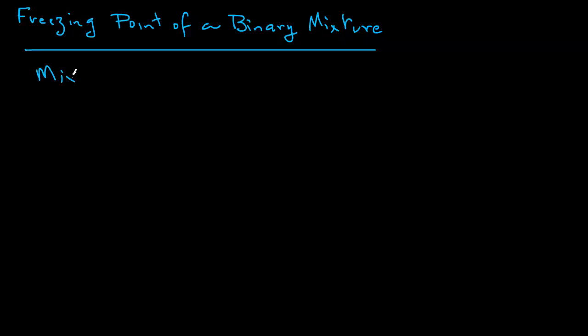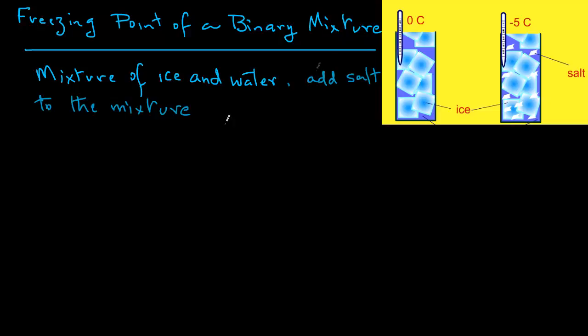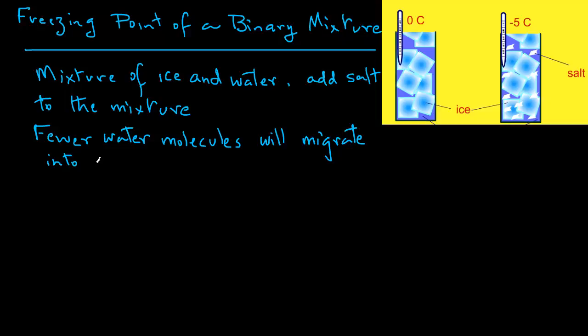Now let's look at the freezing point of a binary mixture. If we add a solute such as salt to the ice and water mixture, the salt will dissolve in the water, but the solubility of salt in ice is very low. This will slow down the freezing part of the molecular exchange because fewer water molecules will have an opportunity to migrate into ice, as some of the space next to the ice-water interface will be occupied by the solute. Thus, the previously established equilibrium will be disturbed.